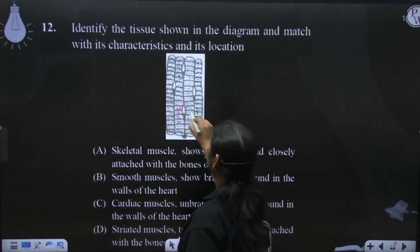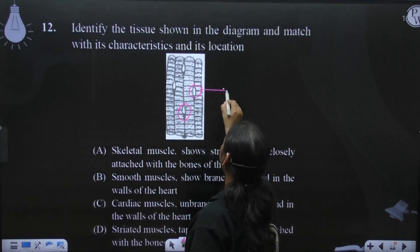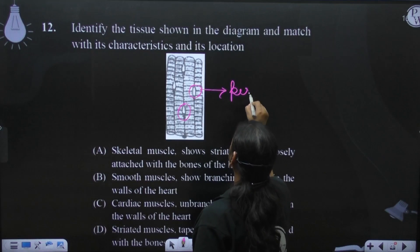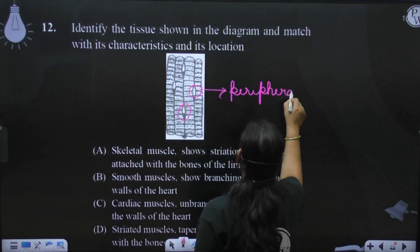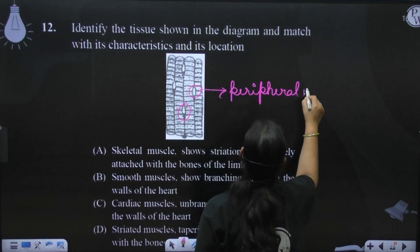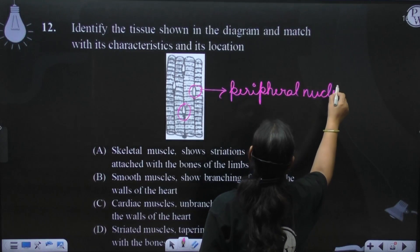Nuclei are peripherally arranged. So, peripheral nuclei are peripherally arranged.